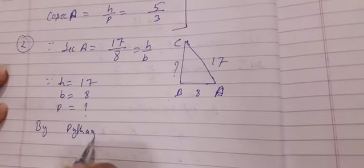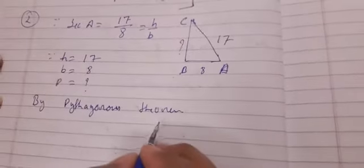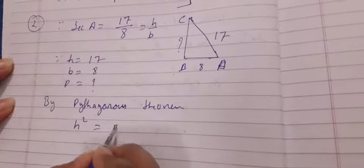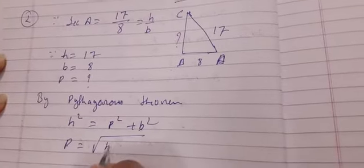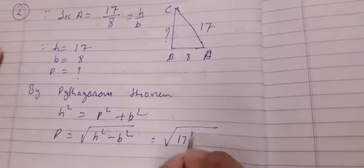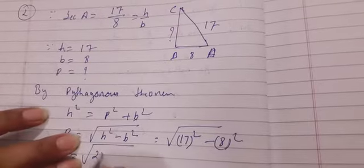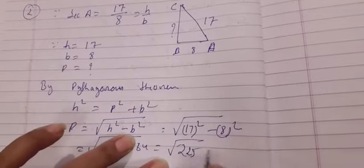By Pythagoras theorem for a right angle triangle: h squared equals p squared plus b squared. We have h and b but not p, so p equals under root of h squared minus b squared. Putting in values: 17 squared is 289 and 8 squared is 64. Subtracting gives 225, so p equals plus or minus 15.